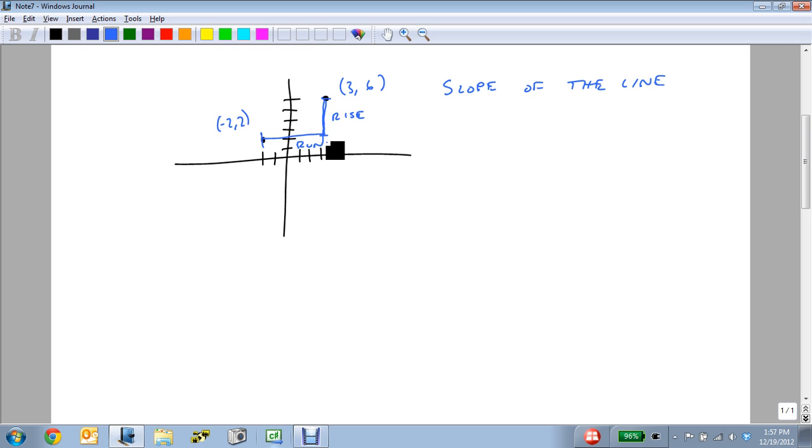And so to get the rise, the rise is simply one y value, which we'll subscript 2, minus the other one, which we subscript 1. We're going to call this x2y2 and this x1y1. And that gives us our rise subtracting the y values one from the other. The run is similar. It's just x2 minus x1.